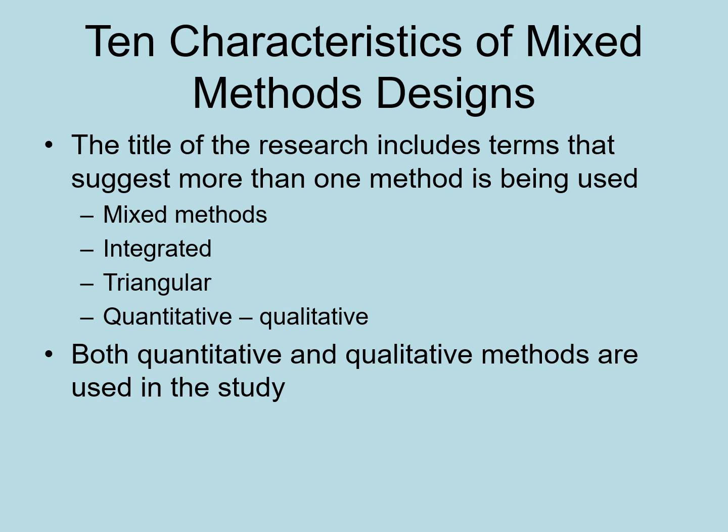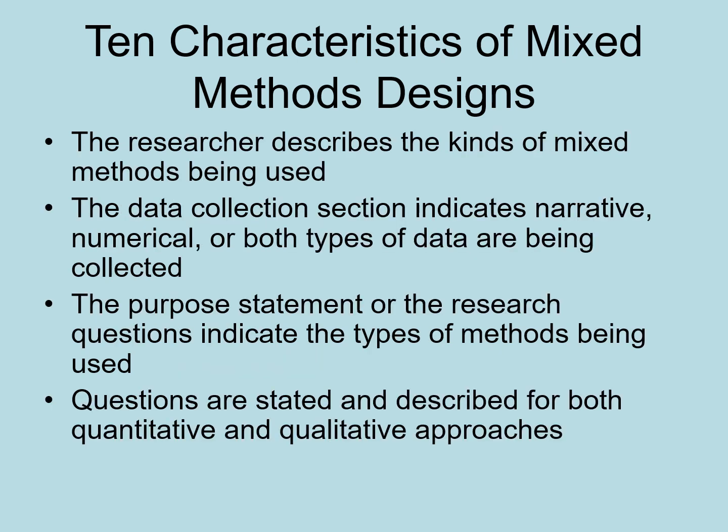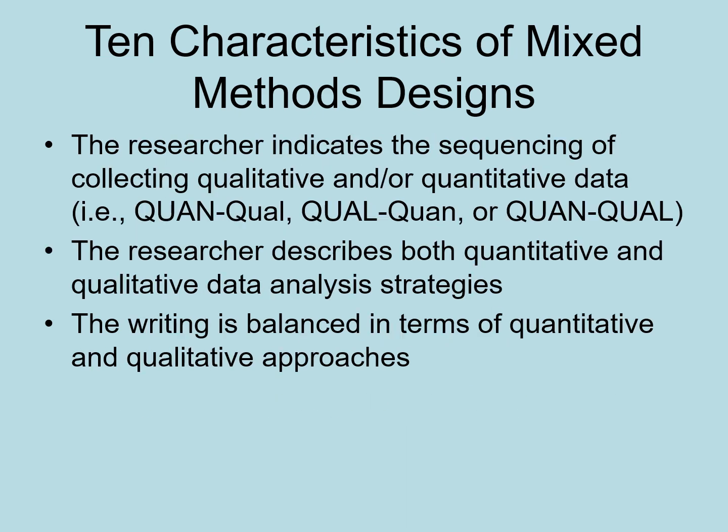These are the 10 characteristics of mixed methods design: The title of the research includes terms suggesting more than one method is being used. Both quantitative and qualitative methods are used and the researcher describes the kinds of mixed methods being used. The data collection section indicates narrative, numerical, or both types of data are being collected. The purpose statement or research questions indicate the types of methods being used. Questions are stated and described for both approaches. The researcher indicates the sequencing of collecting qualitative and quantitative data. The researcher describes both quantitative and qualitative data analysis strategies and maintains balance between the two approaches.